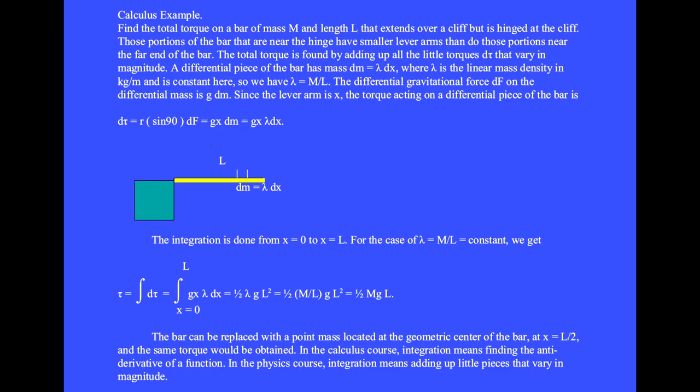This bar of mass M and length L is hinged at the edge of this table top or cliff. As the bar falls, it swings downward, pivoting at the hinge. We want to find the total torque on this bar due to gravity.